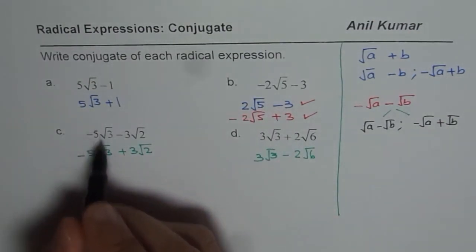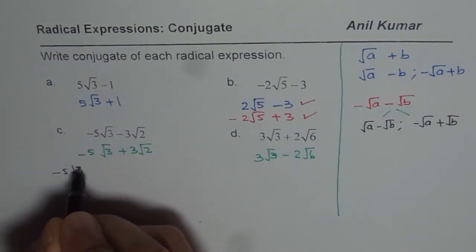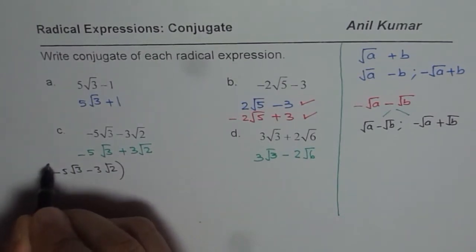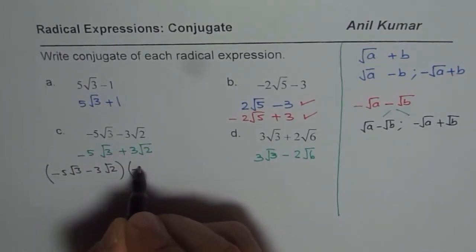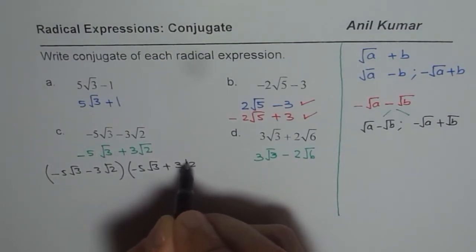I will just continue here. So we will multiply these two and check. So we have -5√3 - 3√2, and we are going to multiply this by -5√3 + 3√2.